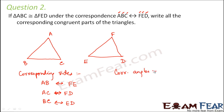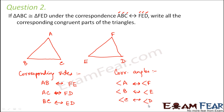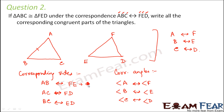The corresponding angles are: angle A corresponds to angle F, angle B corresponds to angle E, and angle C corresponds to angle D. The corresponding vertices are: A corresponds to F, B corresponds to E, and C corresponds to D. This means the length of AB equals FE, BC equals ED, AC equals FD, and angle A equals angle F, angle B equals angle E, angle C equals angle D.